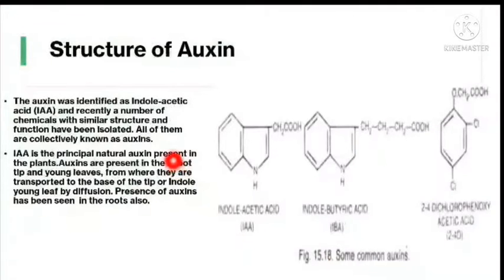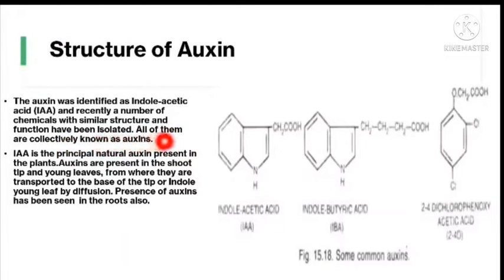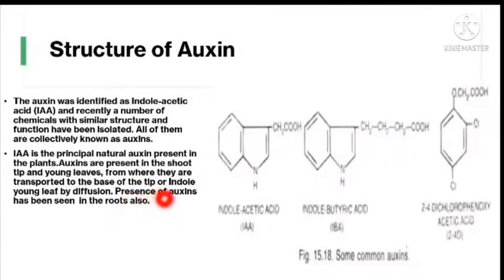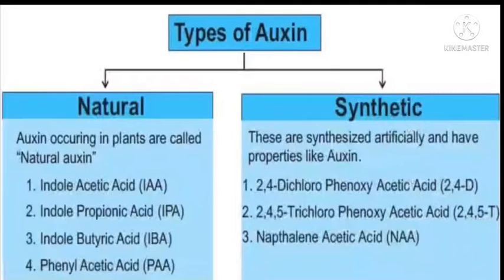Next, the structure of auxins: auxin was identified as indole acetic acid (IAA). Recently, a number of chemicals with similar structure and function have been isolated, and all are collectively known as auxins. Indole acetic acid is the principal natural auxin present in plants. Auxins are present in the shoot tip and young leaves, from where they are transported to the base by diffusion. Auxins have also been found in roots.